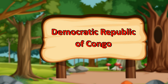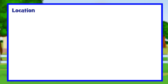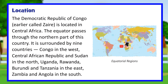The Democratic Republic of Congo, earlier called Zaire, is located in Central Africa. The equator passes through the northern part of this country. It is surrounded by nine countries: Congo in the west, Central African Republic and Sudan in the north, Uganda, Rwanda, Burundi and Tanzania in the east, and Zambia and Angola in the southeast.